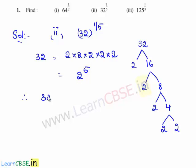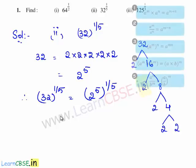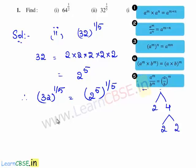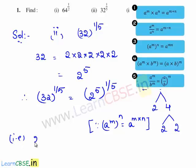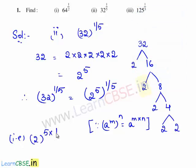Now we write 32 whole to the power of 1 by 5 as 2 raised to the power of 5, whole raised to the power of 1 by 5. As we know, if a power is raised to a power, then the exponents are to be multiplied, since a power m whole power n can be written as a power m times n. That is 2 power 5 times 1 by 5 — the common factor 5 gets cancelled and we are left with 2 power 1. Therefore, 32 whole raised to the power of 1 by 5 is equal to 2.